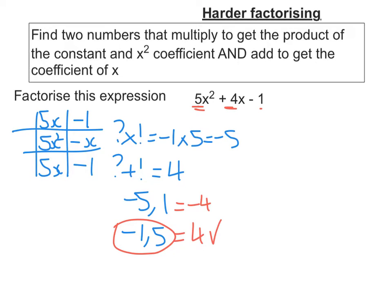5x squared and negative x, the common factor is x. 5x and negative 1, the common factor is plus 1. And it takes positive as that is the sign of the box nearest to it. So my factorised form is 5x minus 1, x plus 1.